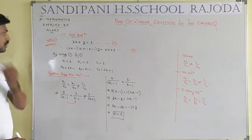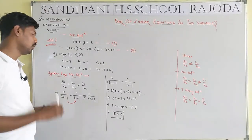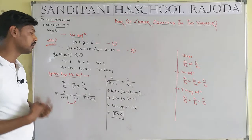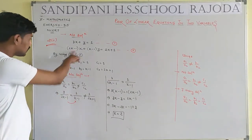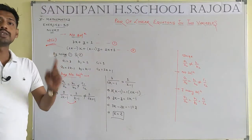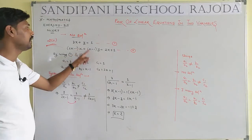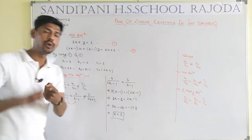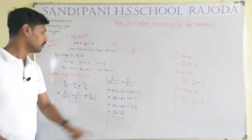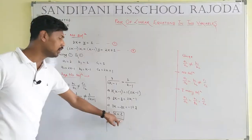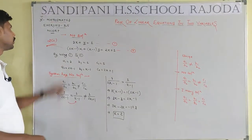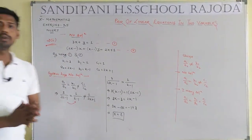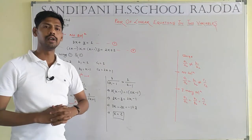Students may wonder: if the system has no solution, how can we find k? The answer is: no solution means x and y have no solution, but we still need to find the value of k. And k equals 2. I hope students are getting the proper solution for questions 1 and 2 of Exercise 3.5. I am Asim Kumar Mandal — thank you so much for watching this YouTube channel of Santhipani Higher Secondary School, Rajoda.